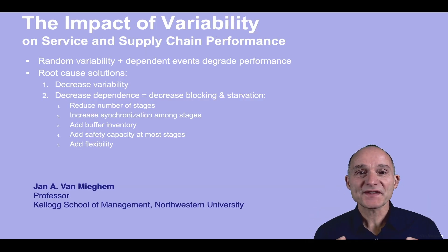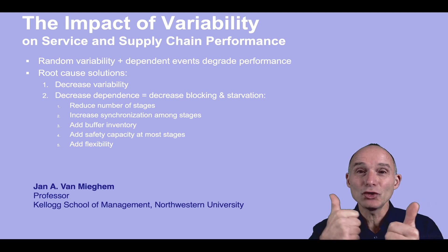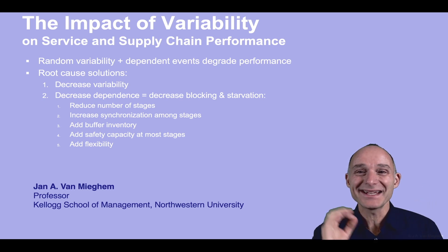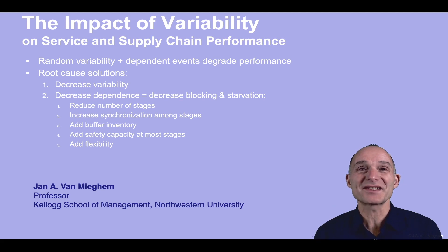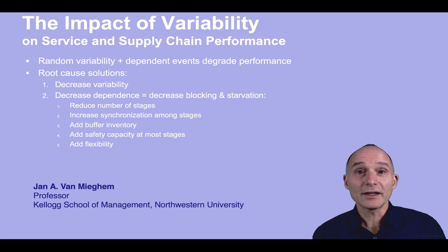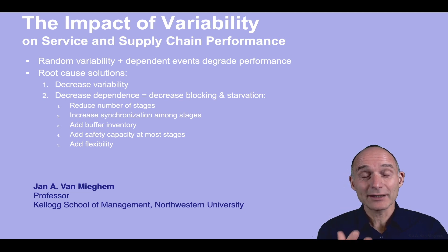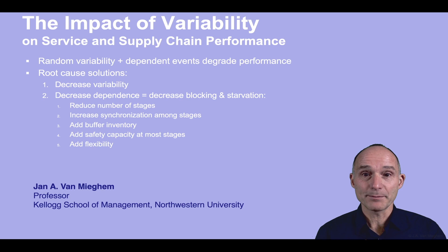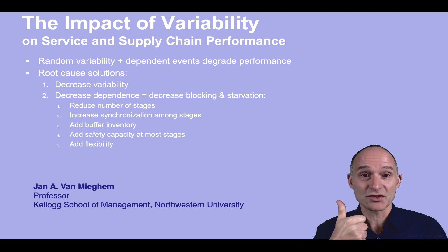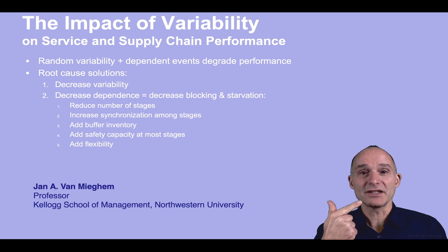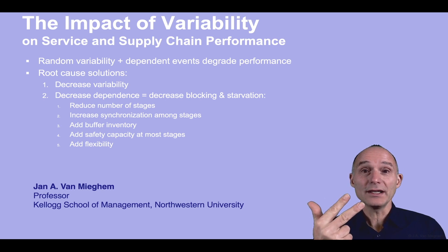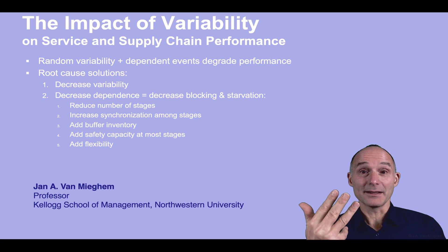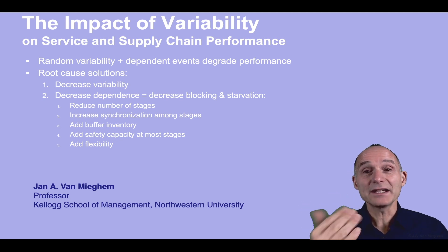To summarize, we have seen that the combined effect of random variability together with dependent events seriously degrades performance in service and supply chains. To improve performance, we can attack the root causes: decrease variability or decrease dependencies. That can be done by reducing the number of stages in your service chain, increasing synchronization among the stages, adding buffer inventory, adding safety capacity at most stages, or adding flexibility.